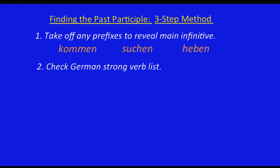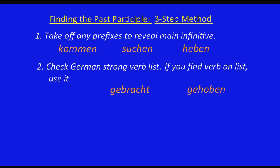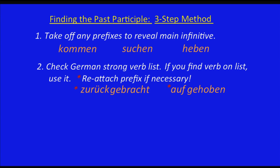The second step would be to check the German strong verb list. Do you know where to find something like that or an irregular verb list? You can find it in a dictionary or in your German textbook. But if you don't find it in either of those two places, just put 'German strong verb list' into Google and you will find it. When you look at this list, if you find the verb you're looking for, use it. For example, 'gebracht' and 'gehoben' are on that list. There is a tip here: reattach the prefix if necessary — so if you had a prefix, you have to put it back. For example, 'zurückgebracht' — the prefix goes in front of 'gebracht'. And 'aufgehoben'. That's step two.